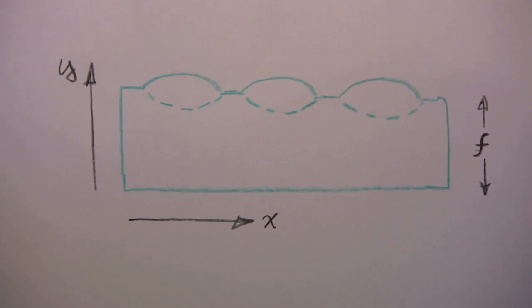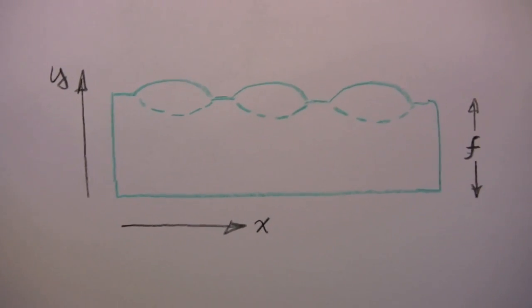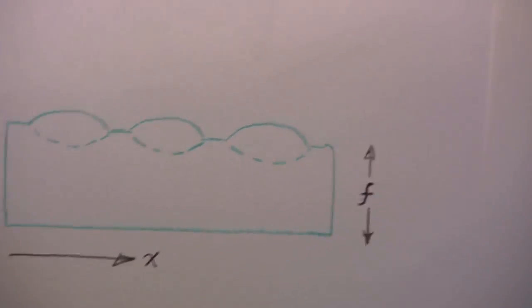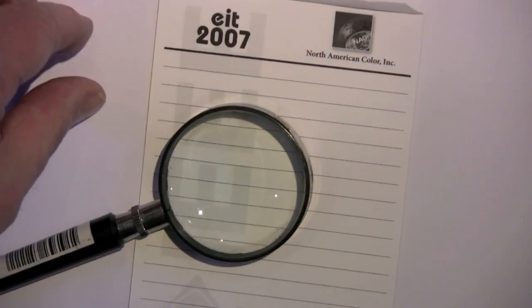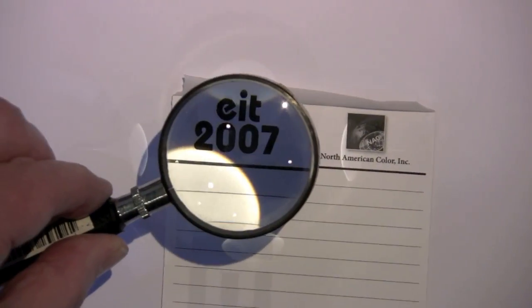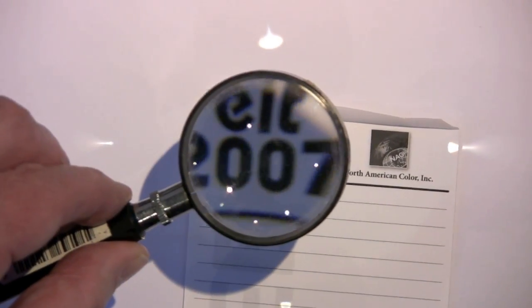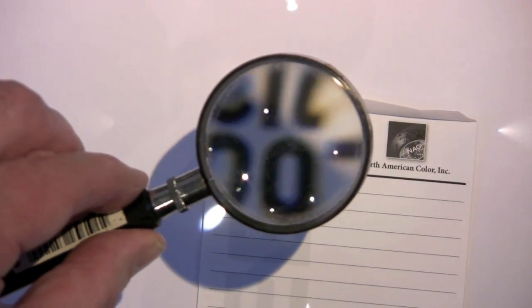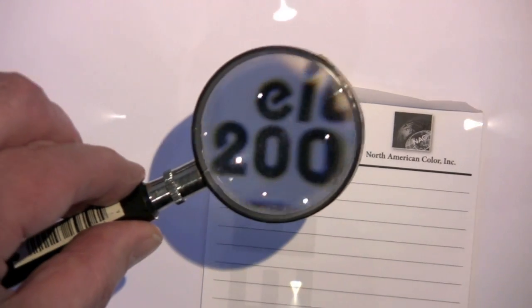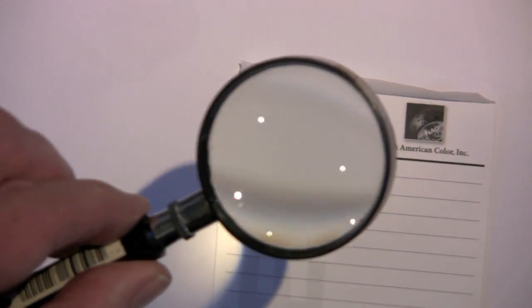As I promised, we're going to show you why the lenses have to be at a focal length, approximately that, to get maximum magnification. To demonstrate that, I'm going to use a simple lens. I'm going to focus here on this logo, EIT 2007. By the way, this is 2011. So, as I get closer to the focal point here, you see that I get the maximum magnification. Any movement beyond that reverses the image.